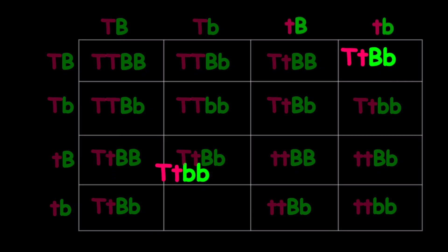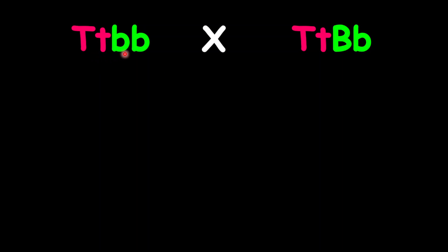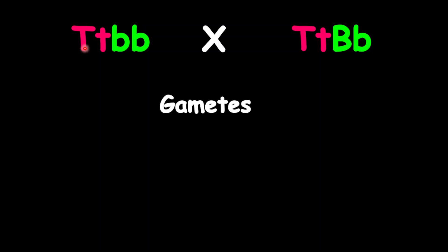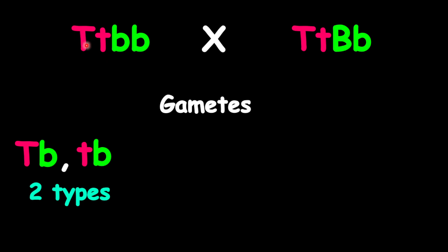For the second example, we're looking at a parent that is heterozygous for one trait but homozygous recessive for another trait, while the second parent is heterozygous for both traits. For the first parent, to determine our gametes, we have a possibility of uppercase T with lowercase B, and the other possibility is lowercase T with lowercase B. Those are the only two possibilities, so we have two types of gametes based upon this genotype.